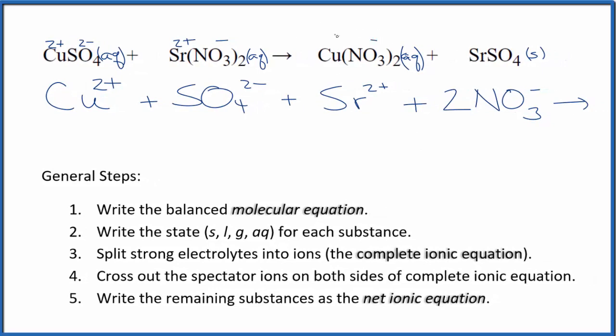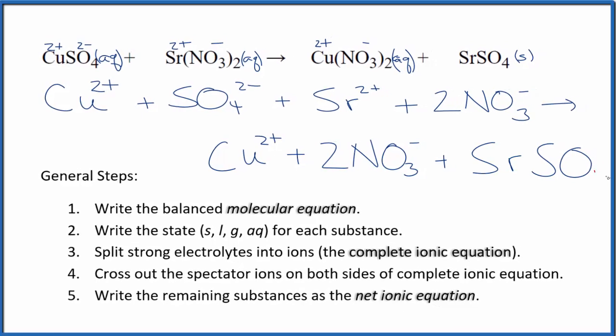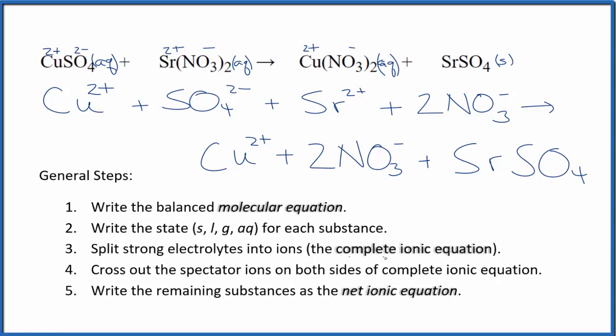For the products, we said the nitrate is negative and the copper is 2 plus. So we'll have our copper(II) ion here again, and then we'll also have 2 of the nitrate ions. For the strontium sulfate here, that's a solid. Because it's a solid, it's a precipitate. We don't split those apart in net ionic equations, so we're just going to keep that together. This is what we call the complete ionic equation.